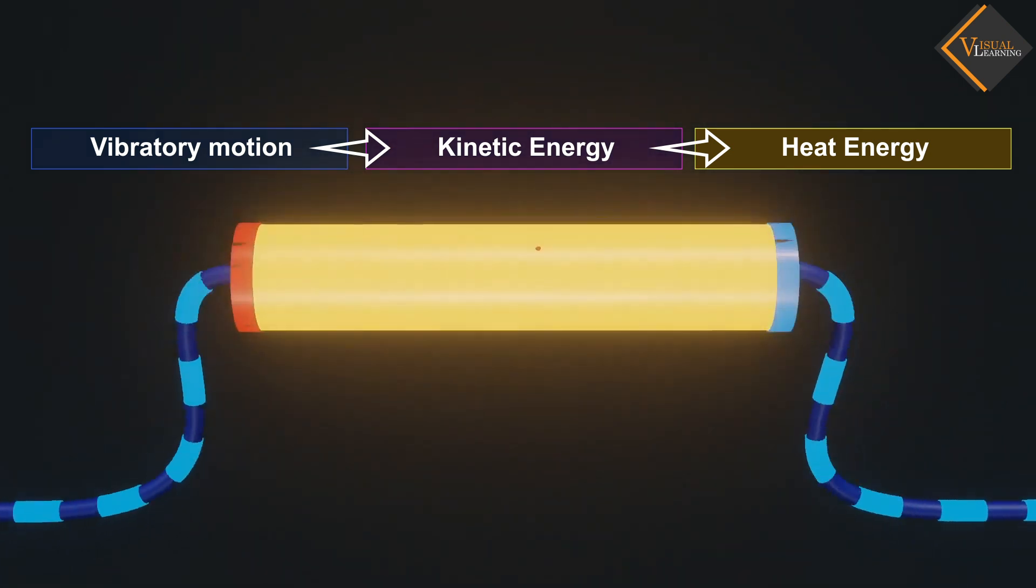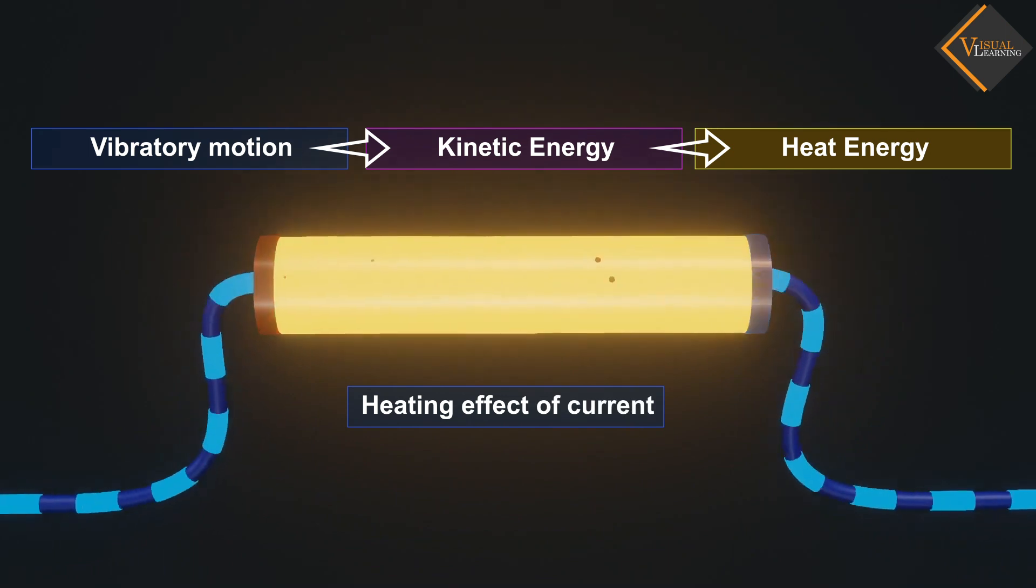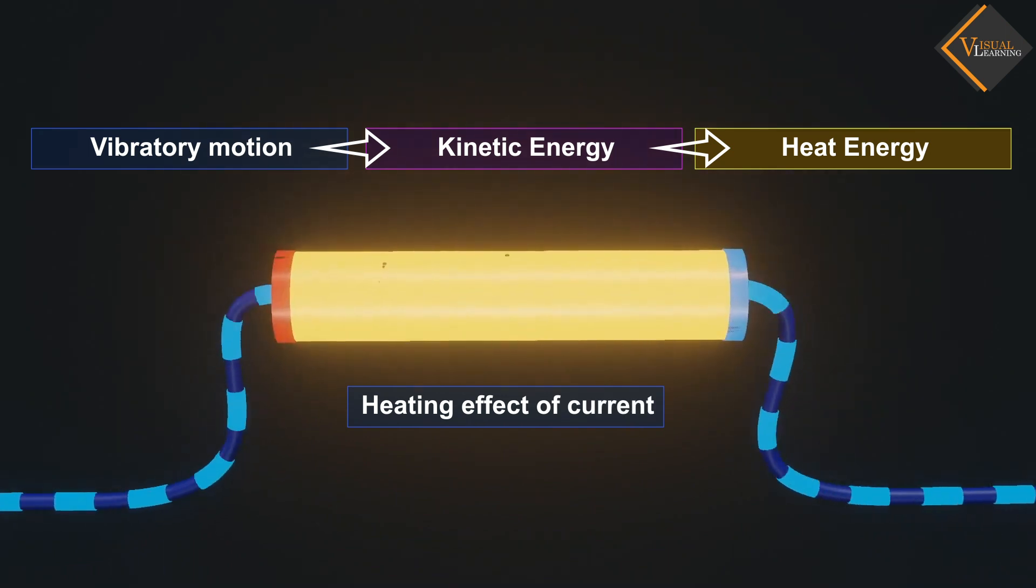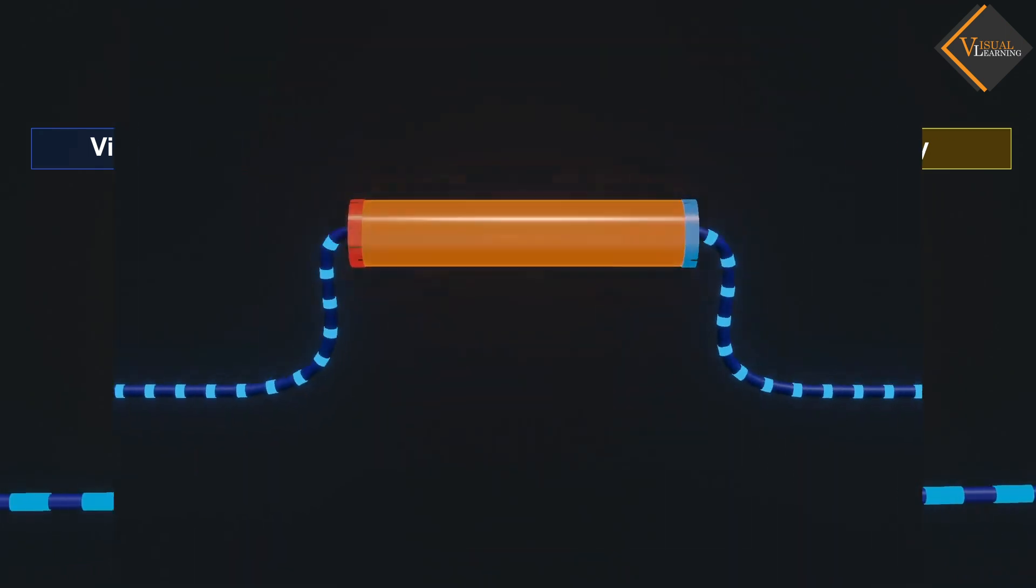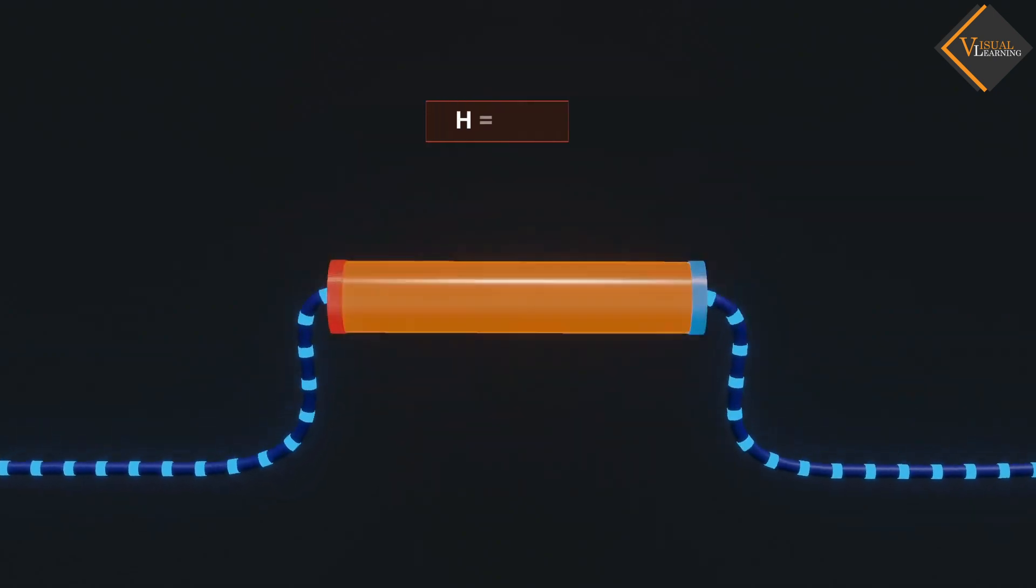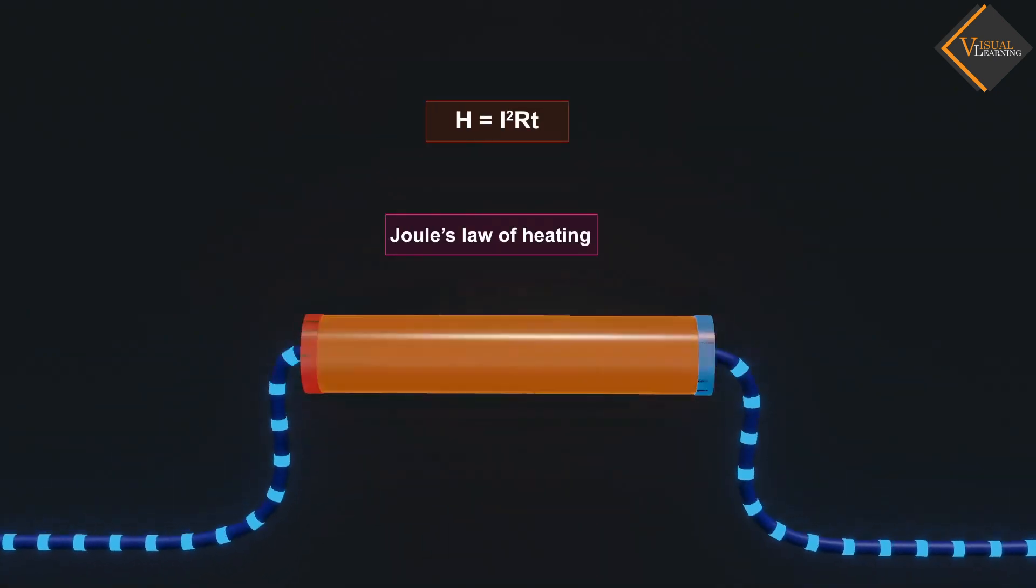This phenomenon is known as the heating effect of current. Heat can be represented as H equals I squared R t. This is known as Joule's law of heating.